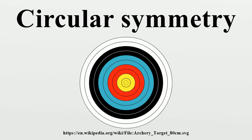For example, the duo-cylinder and Clifford torus have circular symmetry in two orthogonal axes, and the spherinder has spherical symmetry in one-three space.